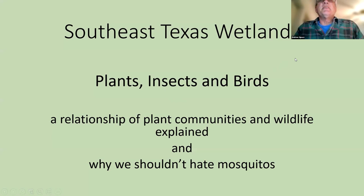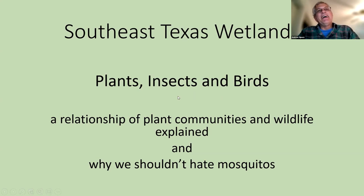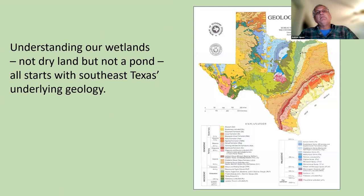My topic is talking about wetlands in southeast Texas — basically from the College Station/Bryan area, over to the Louisiana border, down to around Freeport and the Gulf. I wanted to talk about plants, insects, and birds — there's a really important relationship between these in wetlands. And why we shouldn't hate mosquitoes, which I hear a lot, especially from park managers who are always wanting me to get rid of the mosquitoes in their parks.